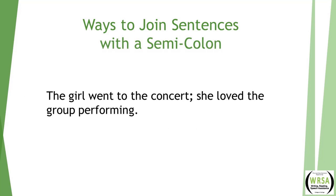The second way to join sentences is with a semicolon. Here we have two sentences: 'The girl went to the concert; she loved the group performing.' Using a semicolon indicates to the reader that there is a close connection between the content of each sentence — closer generally than you would find between two separate sentences.